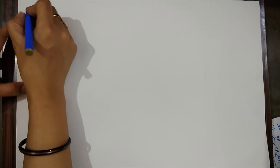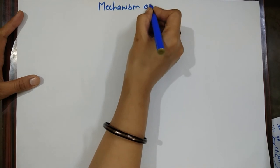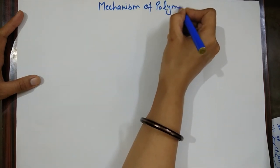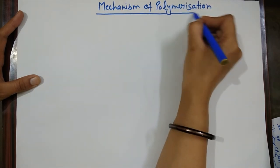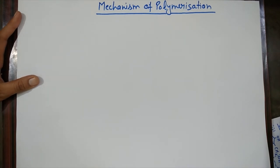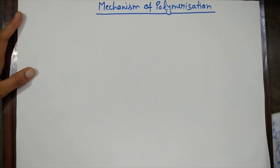Now moving to the next part — the mechanism of polymerization. We divide the mechanism into three different categories. First is free radical polymerization, second is anionic polymerization, and third is cationic polymerization. These three categories represent the mechanisms for addition and condensation polymerization.